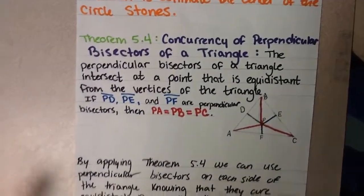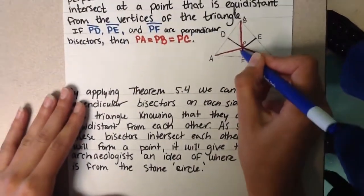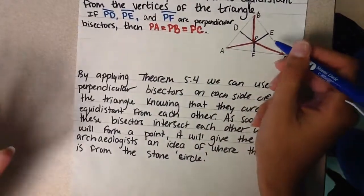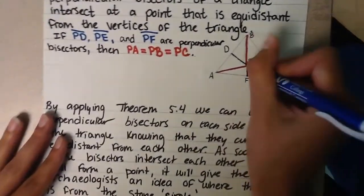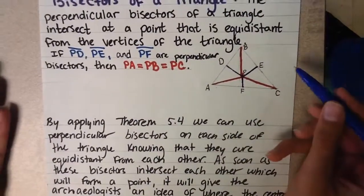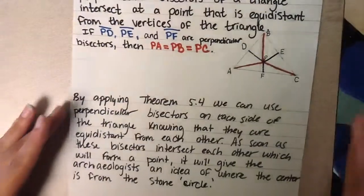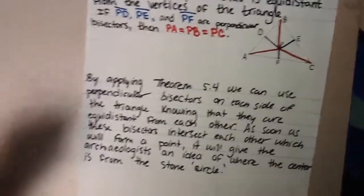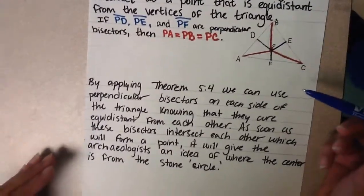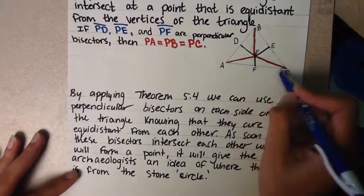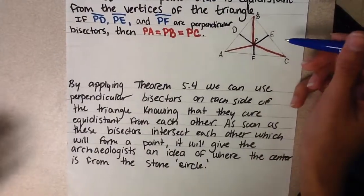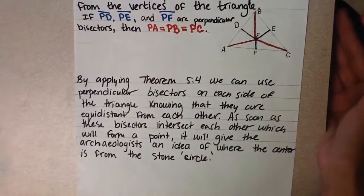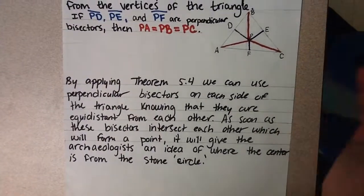Since these are perpendicular bisectors and they intersect at each line segment of this triangle, it's going to eventually give you this center point, which brings you to the center of the triangle. By applying this theorem, we can use the perpendicular bisectors on each side of the triangle, knowing that they are equidistant from each other. As soon as these bisectors intersect each other, which will form a point, it will give the archaeologists an idea of where the center is from the stone circle.